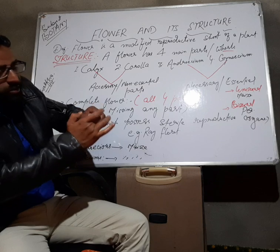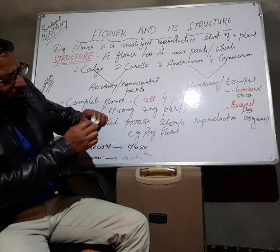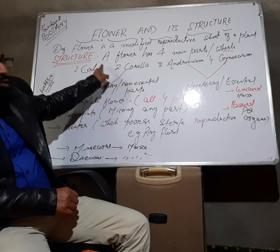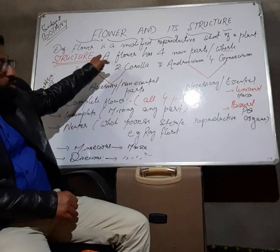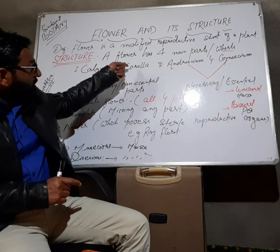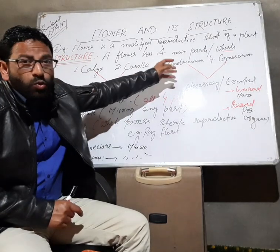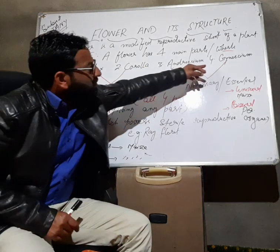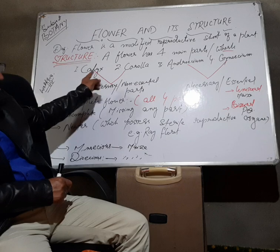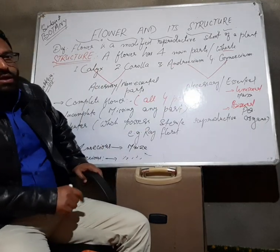This colored whorl is called the corolla, and then this one is known as androecium, and inner to this is the gynoecium. Now, calyx is a collection or group of sepals — sepal is the unit of calyx. Similarly, corolla is a group of petals, androecium is a group of stamens, and gynoecium is a group of carpels.